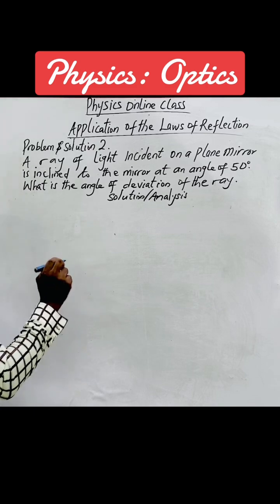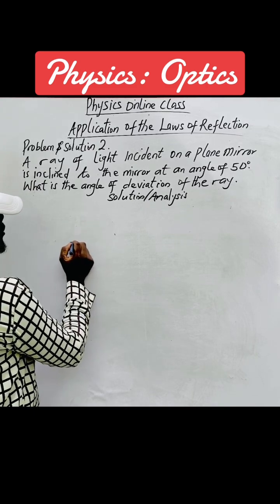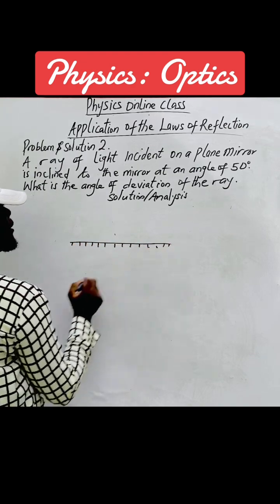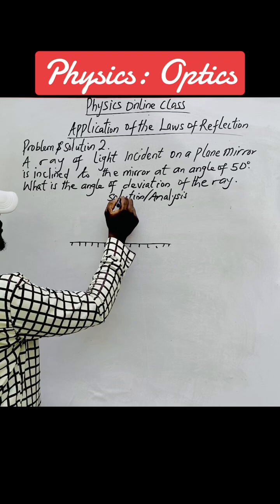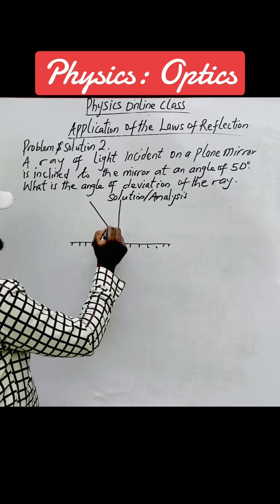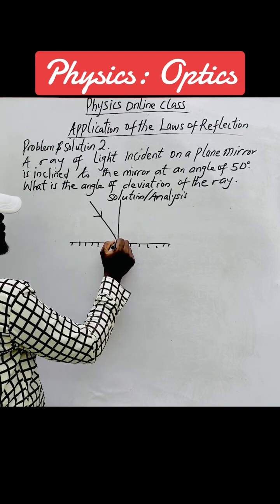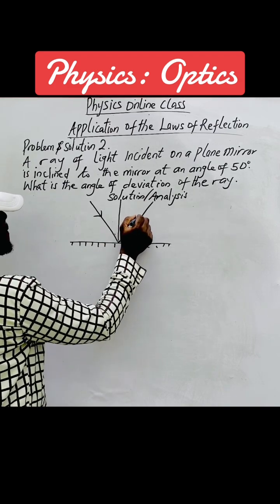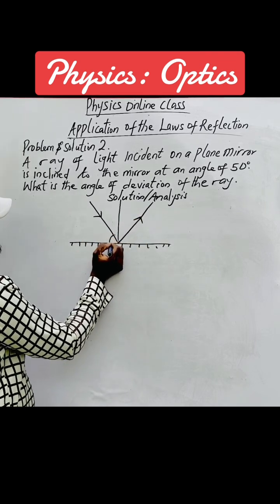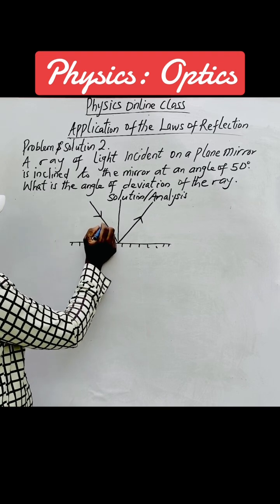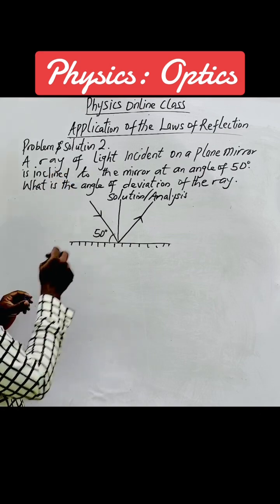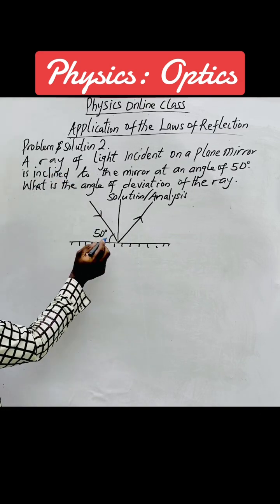The first thing we do is sketch the problem. This is the plane mirror. This is the normal, this is the incident ray, this is the reflected ray. The angle of 50 degrees is the angle at which the incident ray is inclined to the mirror — so here is 50 degrees.